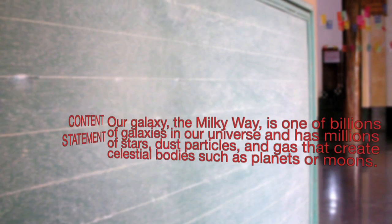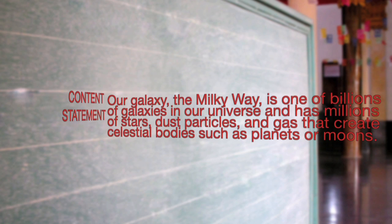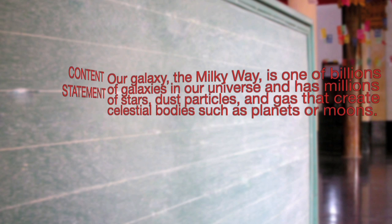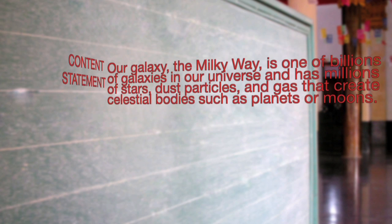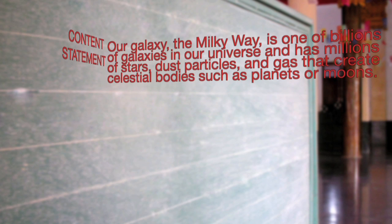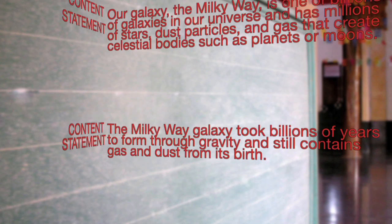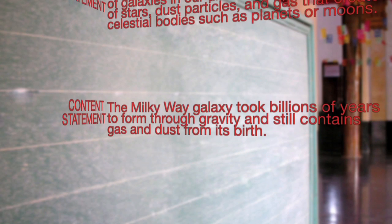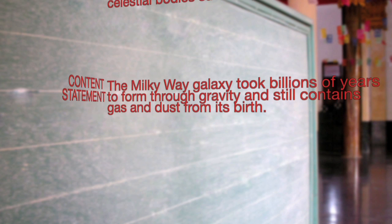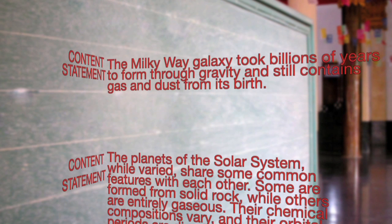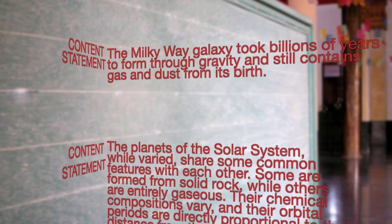Now that you've learned about the Milky Way and our solar system, let's go over a few content statements. Our galaxy, the Milky Way, is one of billions of galaxies in our universe and has millions of stars, dust particles, and gas that create celestial bodies such as planets and moons. The Milky Way galaxy took billions of years to form through gravity and still contains gas and dust from its birth.